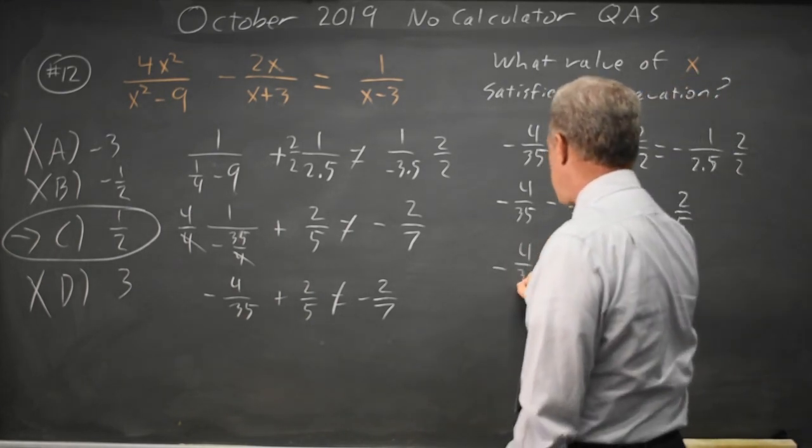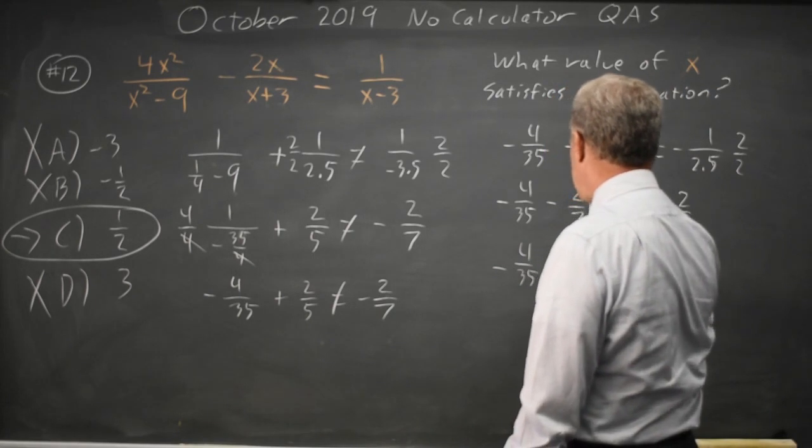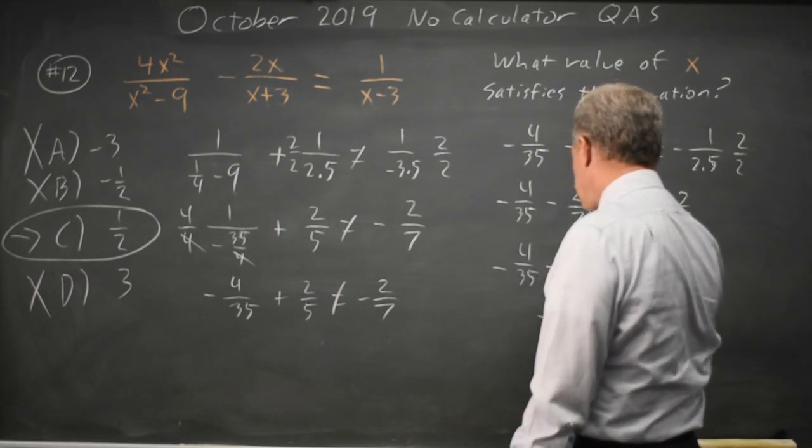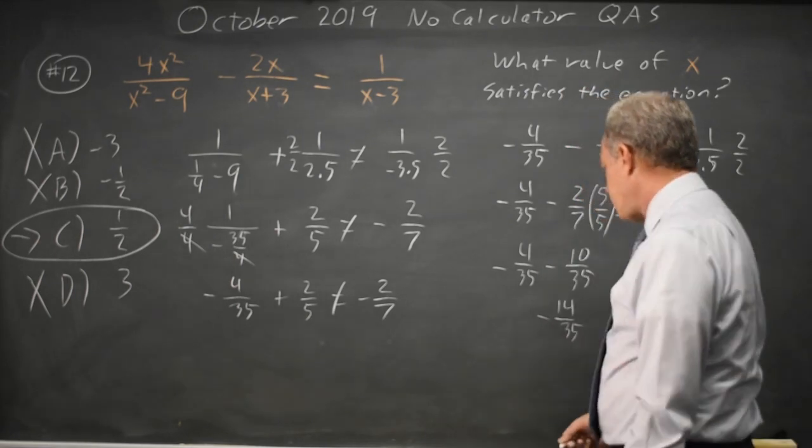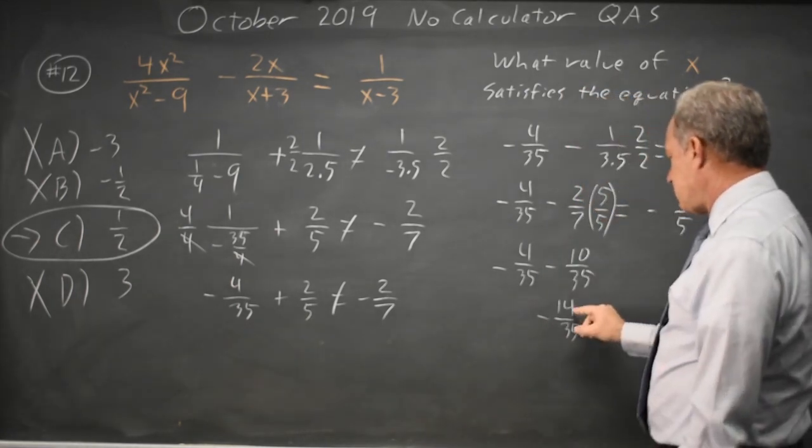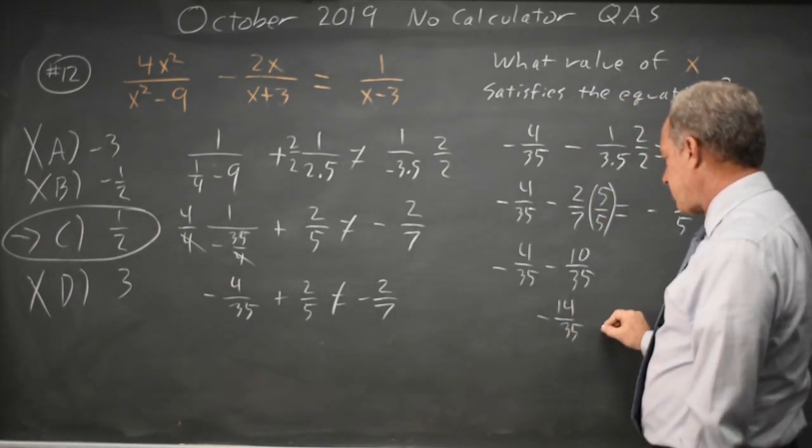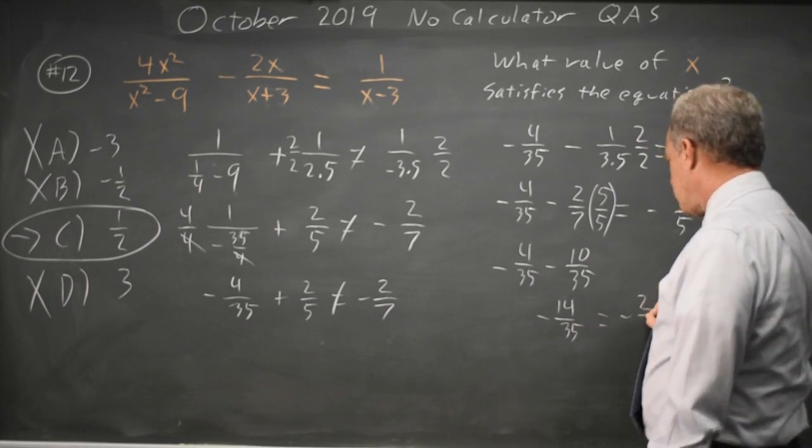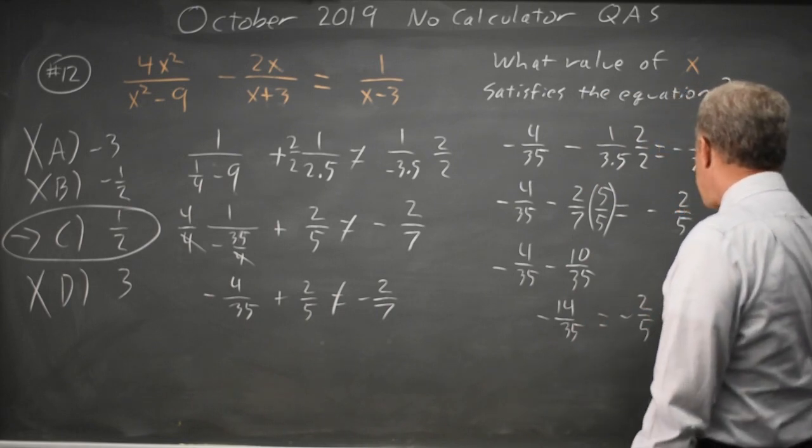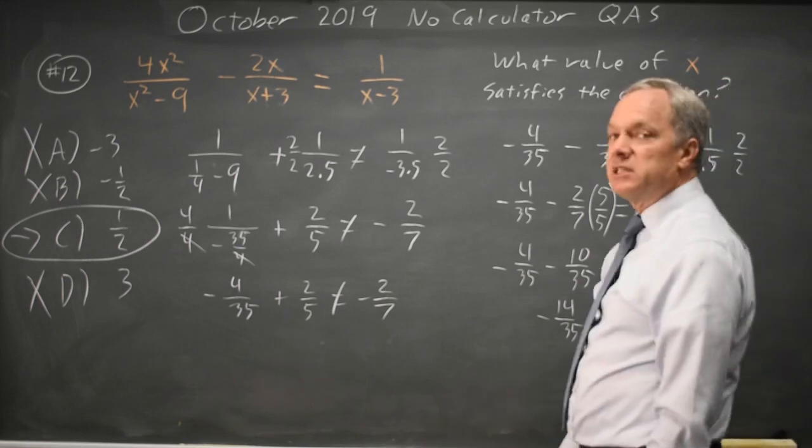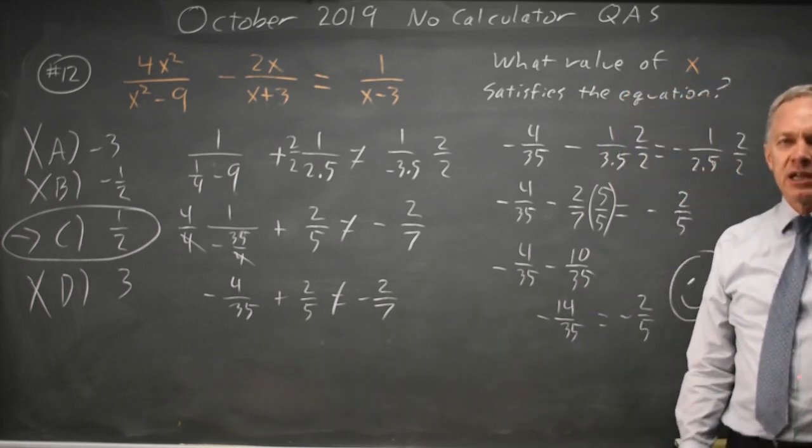Negative 4 over 35 minus 10 over 35. That's negative 14 over 35, and they're both multiples of 7, so that's negative 2 over 5, and that is my right-hand side, so choice C did, in fact, work as expected.